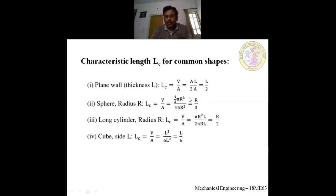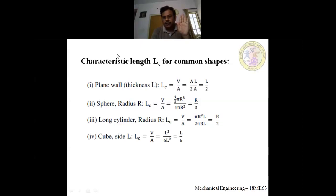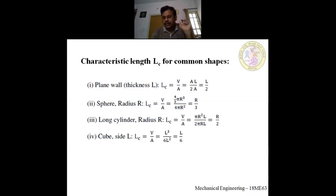For a plane wall, if you take the front surface and back side, the total surface area is two times the face area. Heat transfer along the thickness is negligible compared to the plane area. So area cancels, and the characteristic length for a plane wall is L/2 — that is, the total thickness divided by 2.